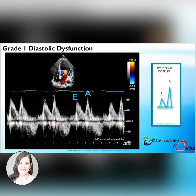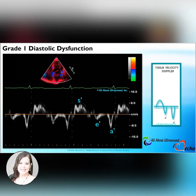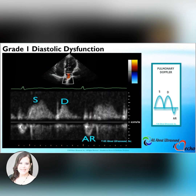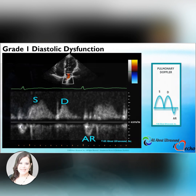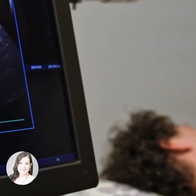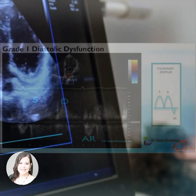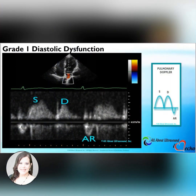For grade one, the mitral inflow pattern will show E to A reversal. There will also be E prime to A prime reversal on the tissue velocity Doppler as well. In grade one diastolic dysfunction, there's really no significant change to the pulmonary Doppler. There's no change from the normal findings because the left atrial pressure is still normal.